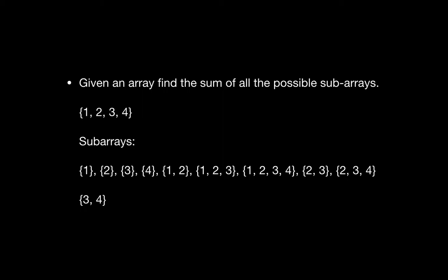If I list down all subarrays of this array [1,2,3,4], they will be: 1; 2; 3; 4; 1,2; 2,3; 3,4; 1,2,3; 2,3,4; and 1,2,3,4. So we have subarrays of length 1, 2, 3, and 4. There is also an empty subarray, but since it doesn't contribute to the sum, I won't consider it.